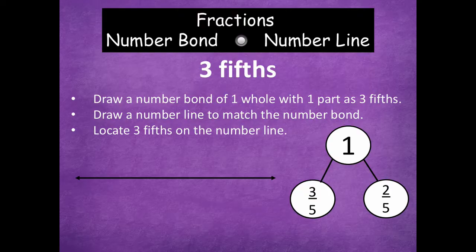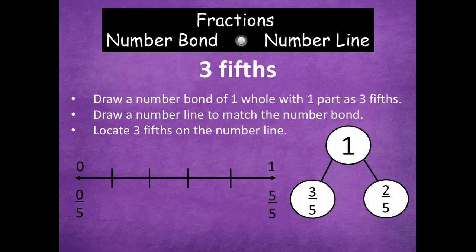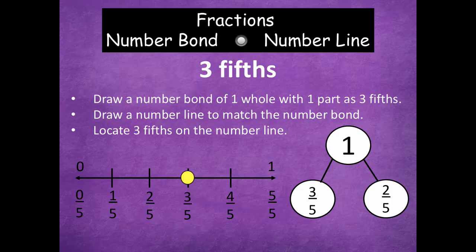Now we're going to model this on our number line. We label the endpoints zero and one, and break the line into fifths — five equal parts. One, two, three, four, five. Zero as a fraction is zero-fifths, and one whole is five-fifths. Labeling in between: zero-fifths, one-fifth, two-fifths, three-fifths, four-fifths, five-fifths. Here is where three-fifths would be represented on the number line.